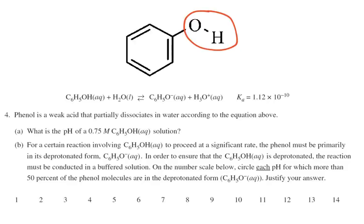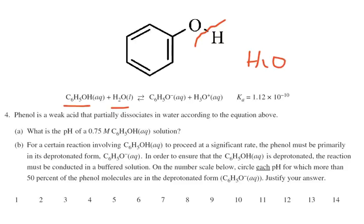But it turns out that little H right there can come off. So if the test question says it's an acid, then better treat it as an acid. We can see that it goes C6H5OH plus water — that H comes off and sticks onto a water molecule, turning into H3O+ and C6H5O with a minus charge. The Ka for phenol is 1.12 times 10 to the minus 10.